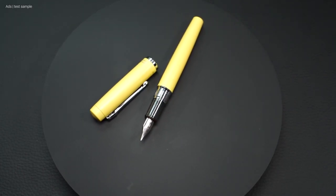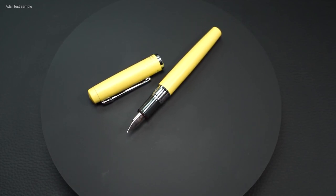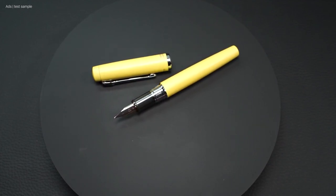The nib in the Procyon is significantly larger and longer than the nib in the Preppy. By the way, if you want to, you could screw in the nib from a 3776 here.